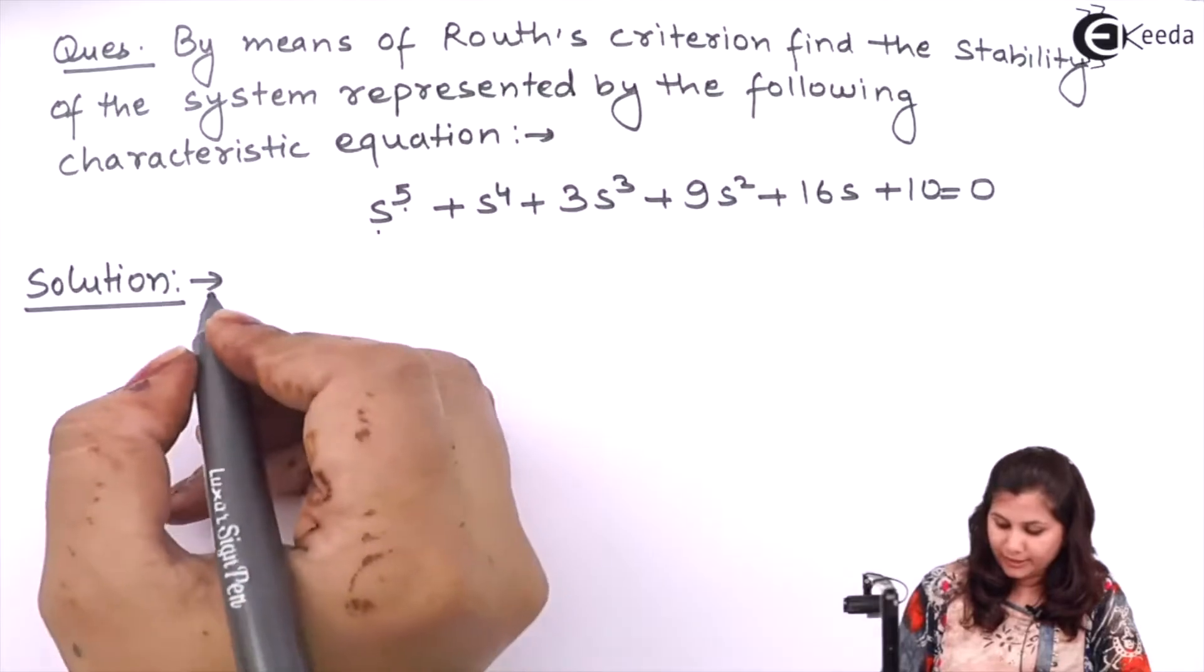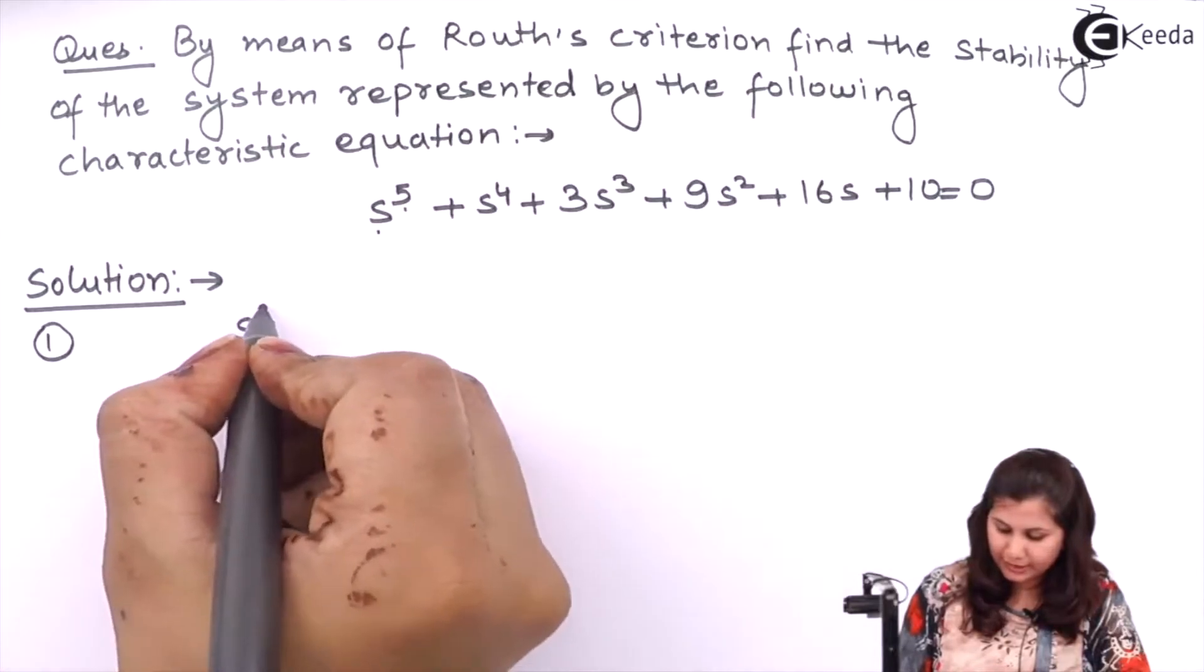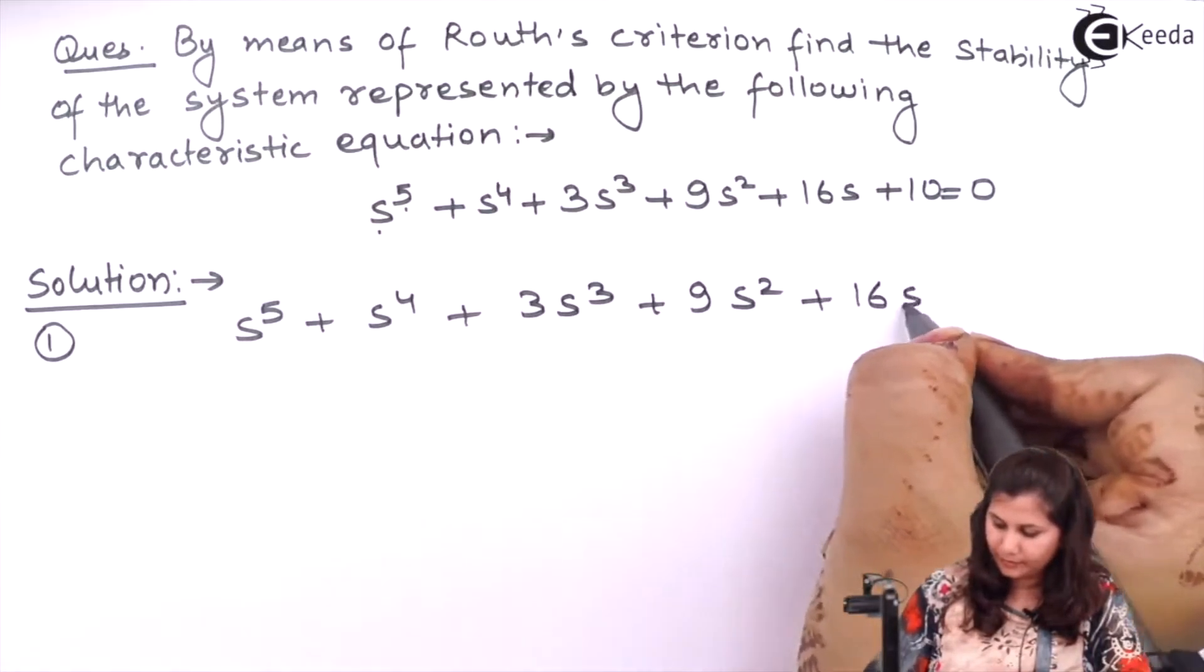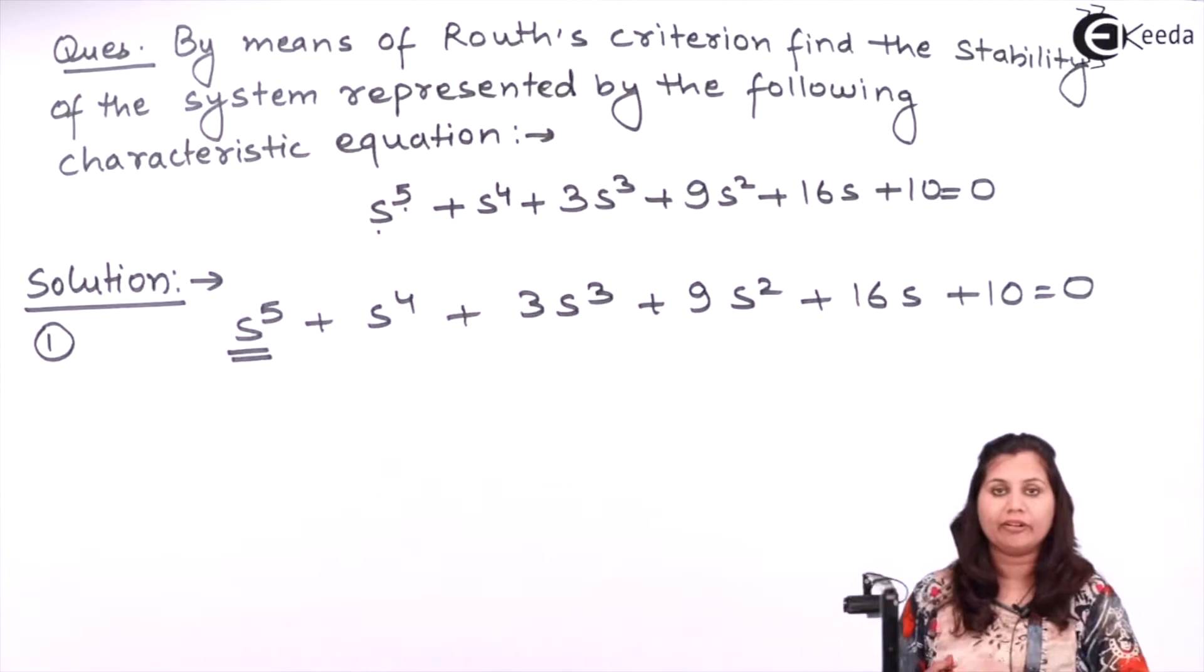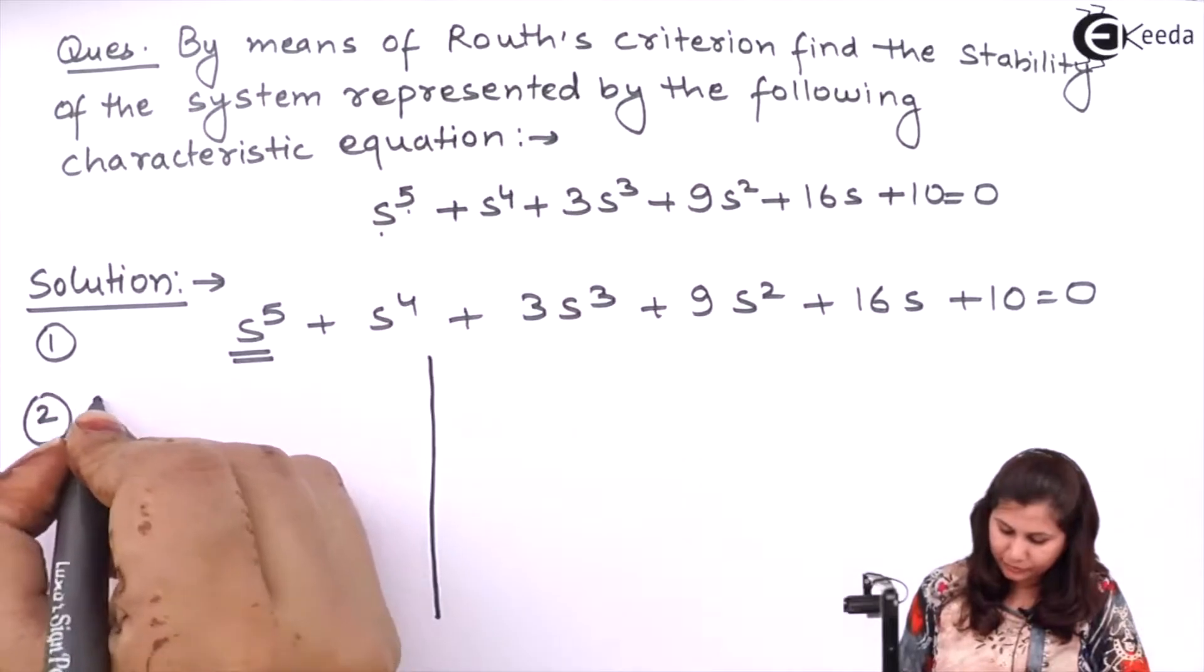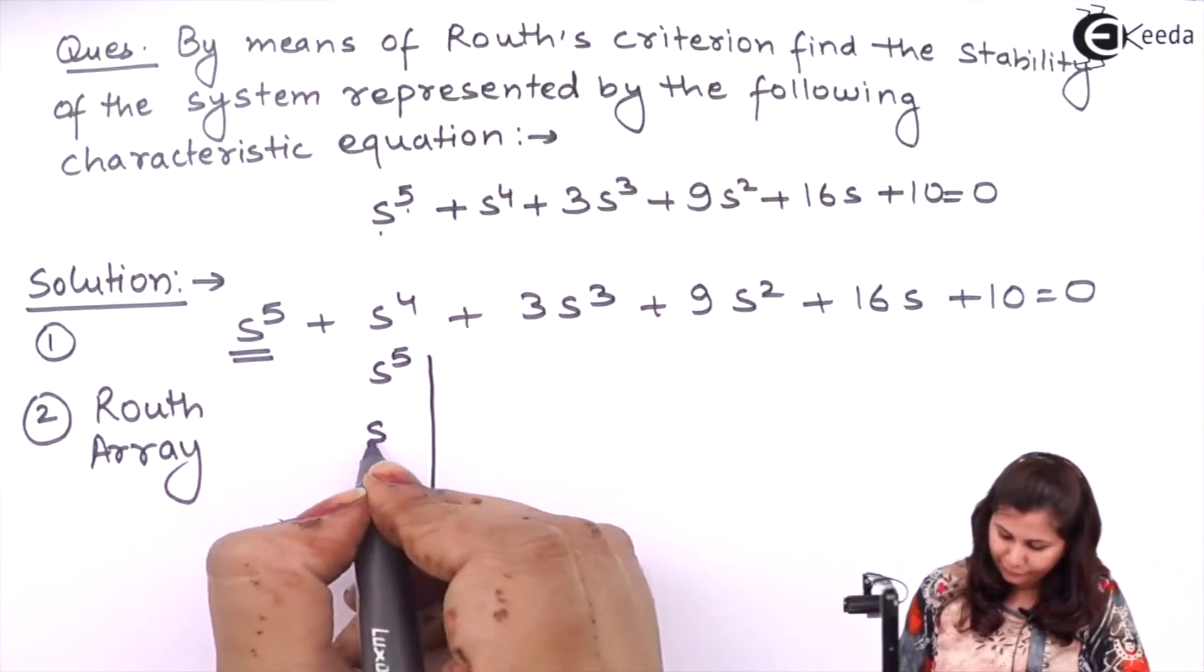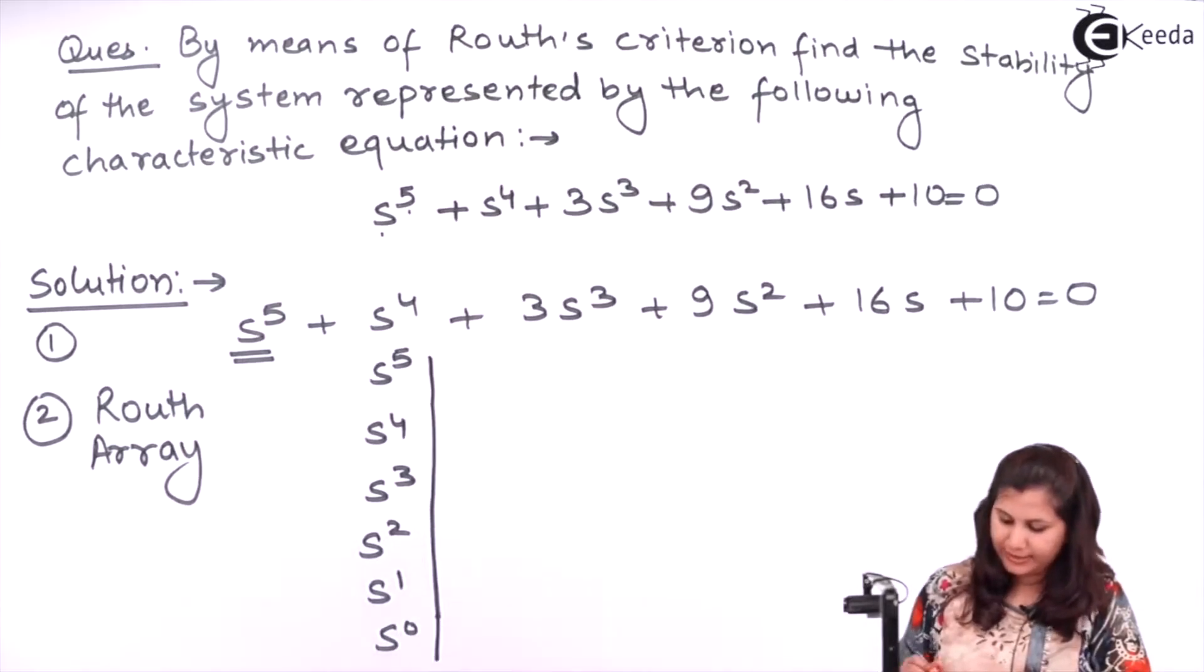First we will determine the characteristic equation. It is already given to us. Starting from the highest power of s, highest power of s is 5, we will form the Routh array. So Routh array will be: s to the power 5, 4, 3, 2, and here s to the power 1 and s to the power 0.